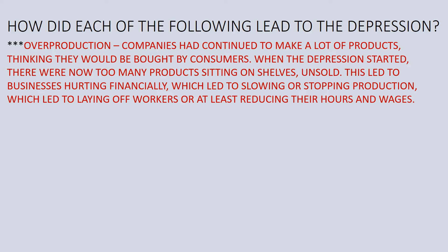The first cause is overproduction. Companies had done overall very well during most of the 1920s and continued to make a lot of products. For most of the decade you make the products, people buy them, and you're doing great. But once the slowdown started in the very late 1920s, especially after the stock market crashed, companies still had a lot of product. When they couldn't sell it, it just sat on their shelves and companies lost money. Businesses get hurt financially, which leads to slowing or stopping production, laying off workers, cutting wages and hours.